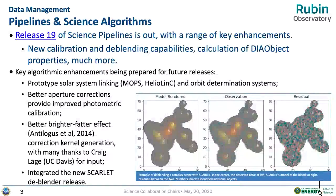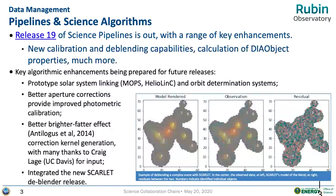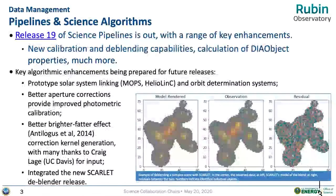There's a lot more, and Leanne, Will, and company are doing planning for future releases on solar system linking, aperture corrections, brighter-fatter effects, etc. The figure here — I call it the 'poodle diagram' — is an example of the effectiveness of the de-blending algorithms now in Release 19.